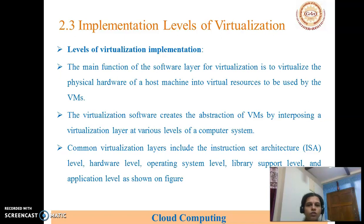The main function of the software layer for virtualization is to virtualize the physical hardware of a host machine into virtual resources to be used by virtual machines. The virtualization software creates the abstraction of virtual machines by interposing a virtualization layer at various levels of the computer system. Common virtualization layers include the instruction set architecture, hardware level architecture, operating system level, library support level, and the application level.